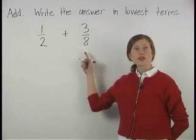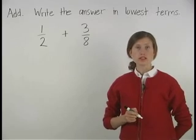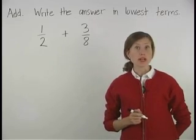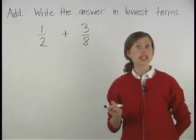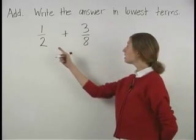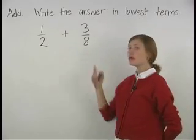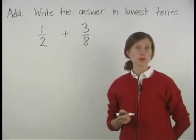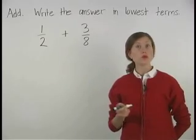Notice that one-half and three-eighths are unlike fractions. Our first step when adding unlike fractions is to get a common denominator. The common denominator of two and eight will be the least common multiple of two and eight, which is eight.